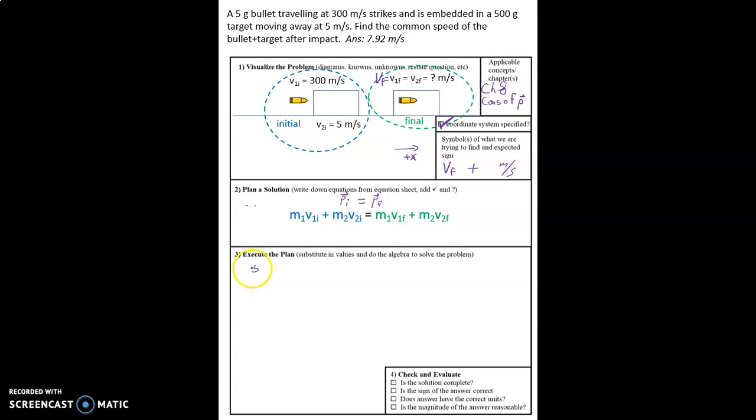We just go in and fill in the values. We've got 5 grams times 300 meters per second plus 500 grams times 5 meters per second equals 5 grams times vf plus 500 grams times vf.